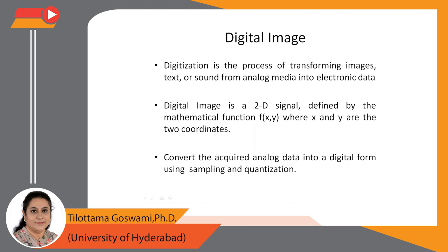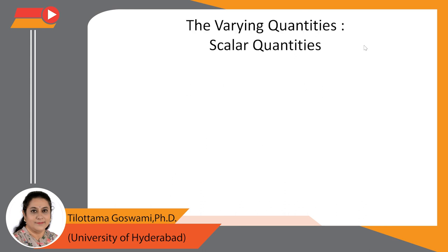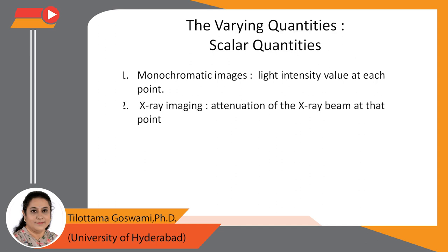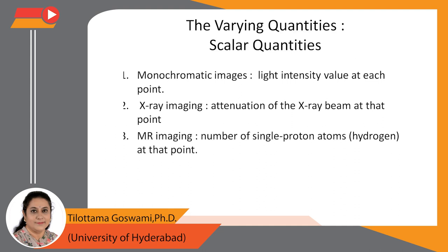The digital image is a 2D signal defined by the mathematical function f(x, y), where x and y are the coordinates. We can convert analog data to digital form using two steps: sampling and quantization. The quantity at point (x, y) is varying and the value is either scalar or vector. In monochromatic images it's the light intensity value at each point; for x-ray imaging it's the attenuation of the x-ray beam at that point; for MR imaging it's the number of single proton atoms at that point.